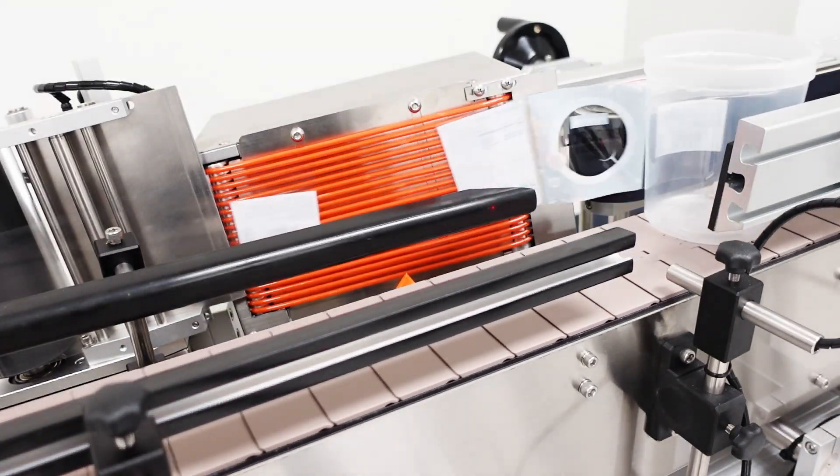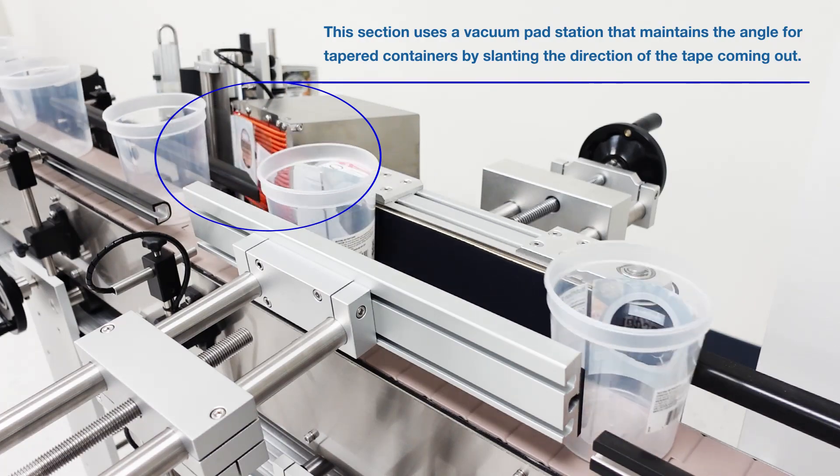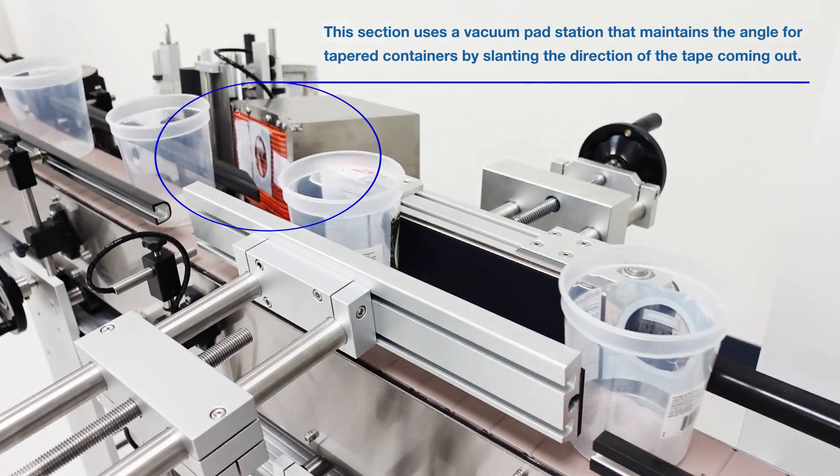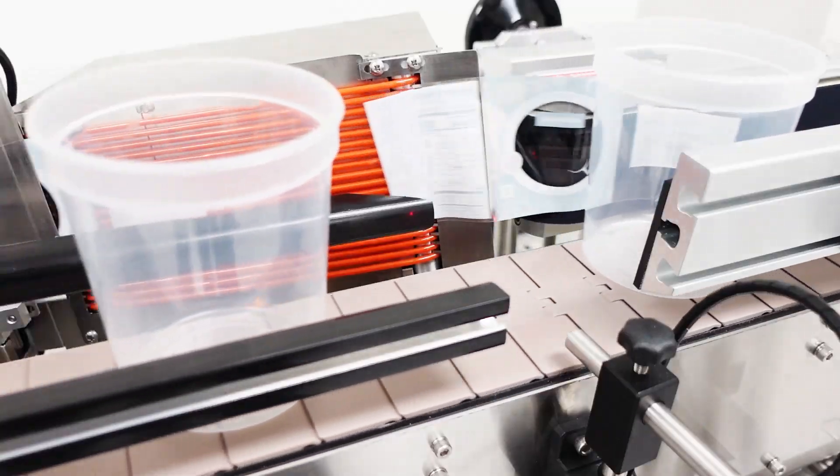Filled and capped bottles enter the labeler on the conveyor belt and are slowed at the bottle spacer wheel. The bottle spacer wheel spread sets the space between bottles as they travel towards the peel plate.